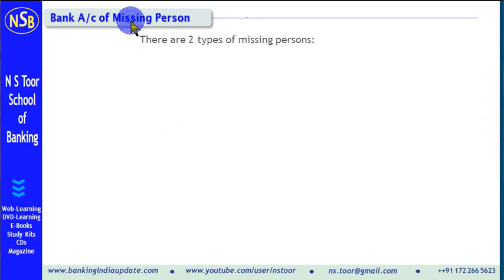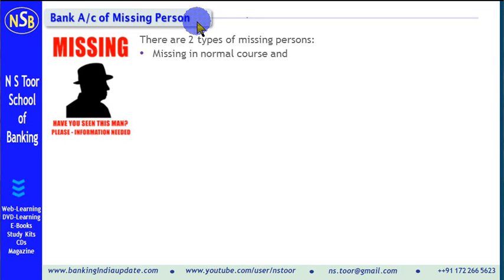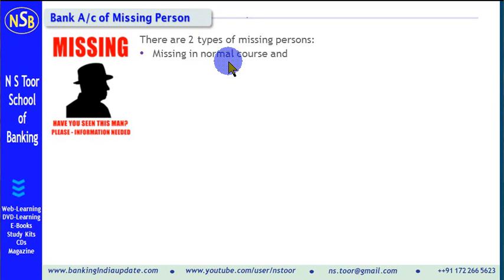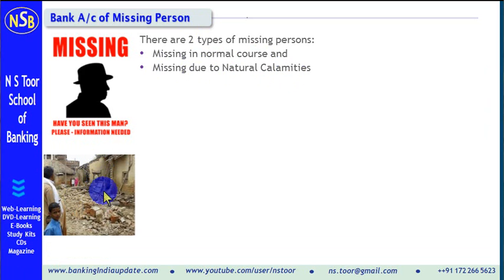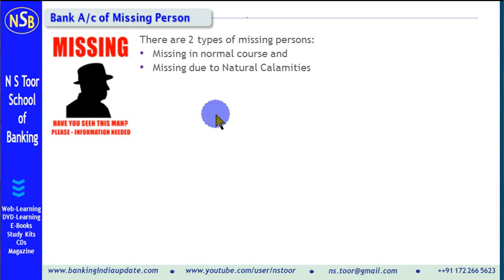The missing person falls into two categories. One is a person who is missing in a normal course. And another, a person who is missing because of natural calamities — some natural disaster has taken place and as a result, the person is missing. We shall discuss these two situations one after another.